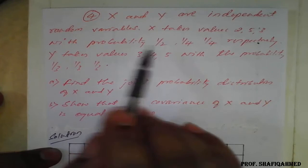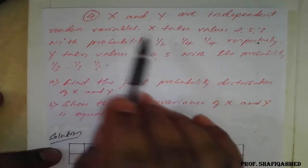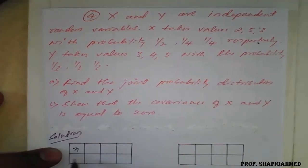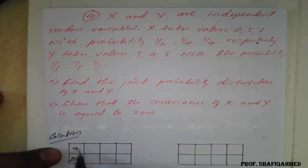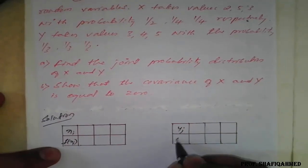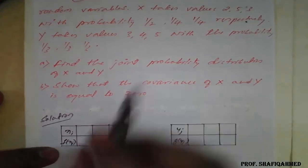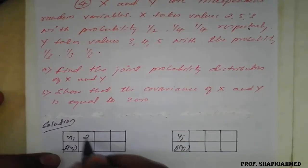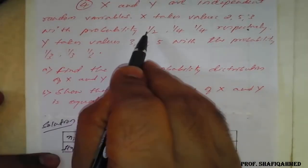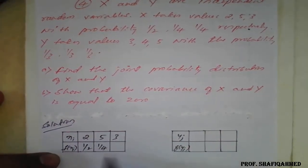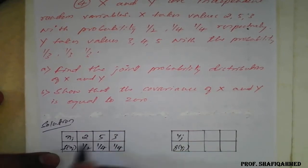I have taken this question purposely because the way of asking is a little bit different. They have given X takes the values 2, 5, 3 — so this is the X value and this is the F of X value, that is the probability. So X_i and F(X_i): X takes the values 2, 5, 3 with probabilities 1/2, 1/4, 1/4. This is nothing but the marginal distribution for X.